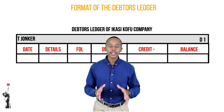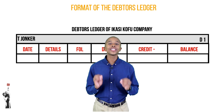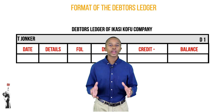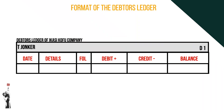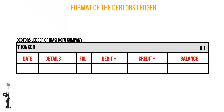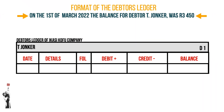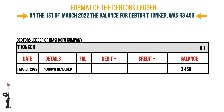Post the following balance and journals to the debtor's ledger of T Younger. You will always start with the balance, as this is the money that the debtor owed at the beginning of the month. In this example, the balance on the 1st of March 2022 for debtor T Younger was R3,450. After the balance has been entered, the journal transactions of T Younger should be entered.